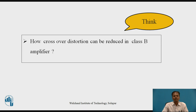Students can pause the video here and consider this question: how can crossover distortion be reduced in a Class B amplifier? In a Class B amplifier, since transistors are not biased — biased at zero voltage — the base-to-emitter cut-in voltage, which is very small, if not overcome, the transistors will remain off. So some part of the input AC voltage signal is used to turn on the transistors, to overcome the barrier potential of the base-emitter junction of the transistors.